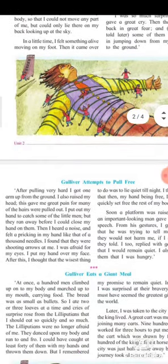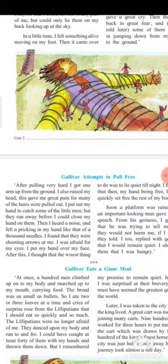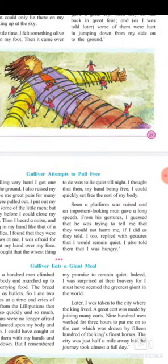Gulliver attempts to pull free. 'After pulling very hard I got one arm up from the ground. I also raised my head. This gave me great pain, for many of the hairs were pulled out. I put out my hand to catch some of the little men but they ran away before I could close my hand on them. Then I heard a noise and felt a prickling in my hand like that of a thousand needles. I found that they were shooting arrows at me. I was afraid for my eyes. I put my hand over my face. After this, I thought that the wisest thing to do was to lie quiet till night.'